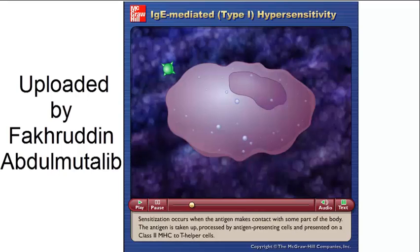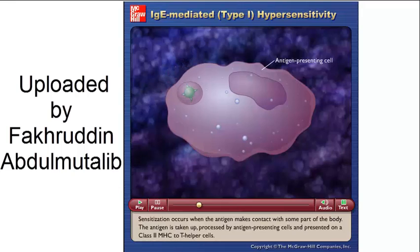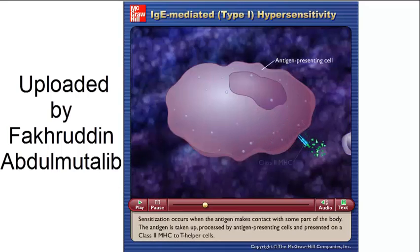Sensitization occurs when the antigen makes contact with some part of the body. The antigen is taken up, processed by antigen-presenting cells, and presented on a class II MHC to T helper cells.